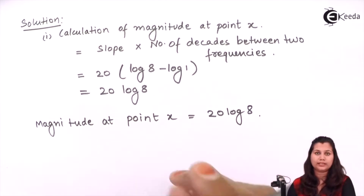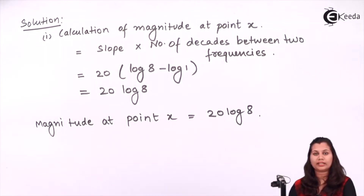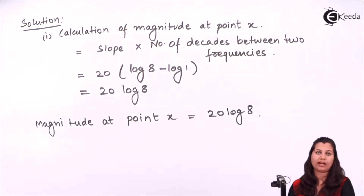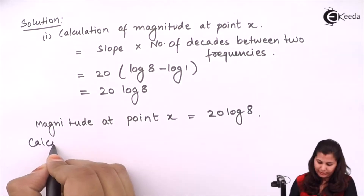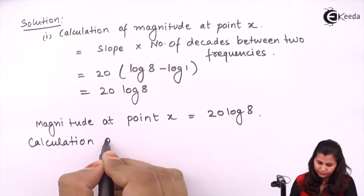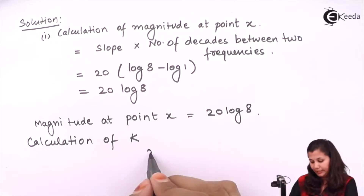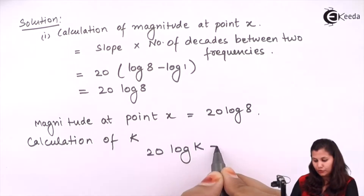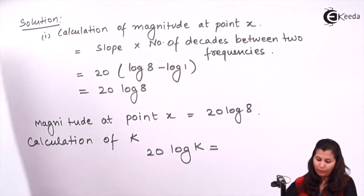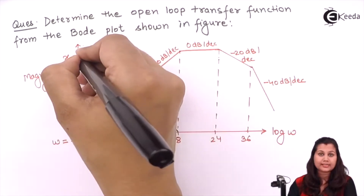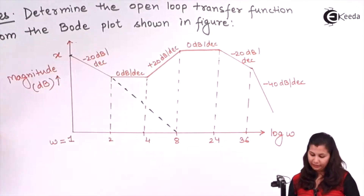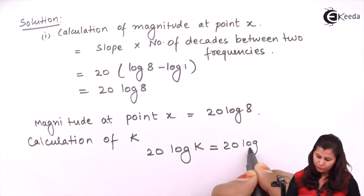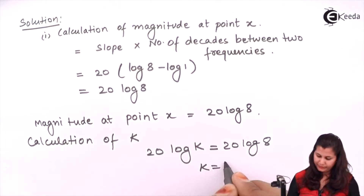Now we will calculate the constant term K. The formula is: 20 log K equals the magnitude at point x, which is 20 log 8. Comparing both sides, K comes out to be 8. So this is how we can calculate the constant term K.